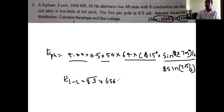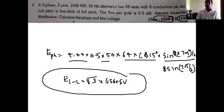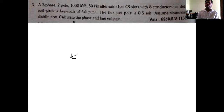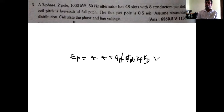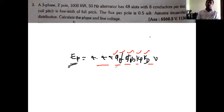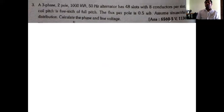To find the line-to-line voltage for three-phase, multiply by root 3: E_line equals root 3 times 6560.5 volts. This is the procedure to solve the problem — identify the knowns and unknowns, write the equation, find each unknown systematically, and substitute to get the final answer.